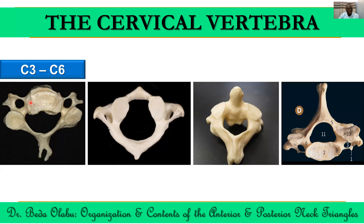The second unique thing about typical cervical vertebrae is the presence of the transverse foramen for the passage of the vertebral arteries. This is usually present in typical cervical vertebrae. We do not usually have the foramen transversarium in a C7 vertebra in many occasions, because most of the time the vertebral artery does not pass through C7 — it enters through C6 going upwards.